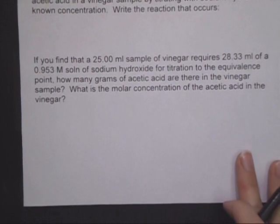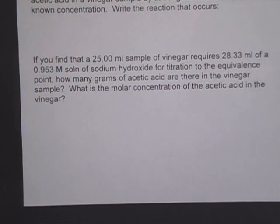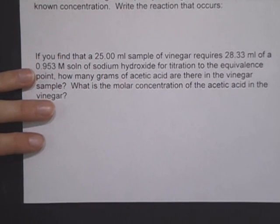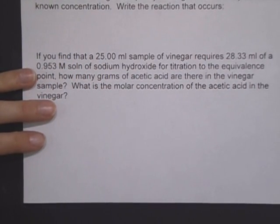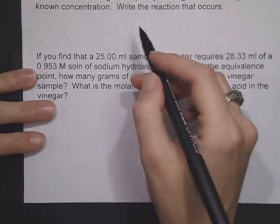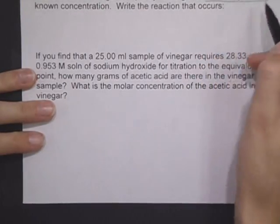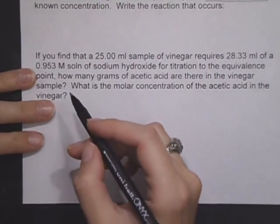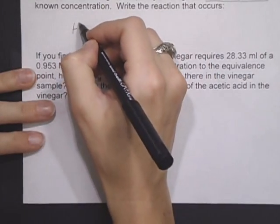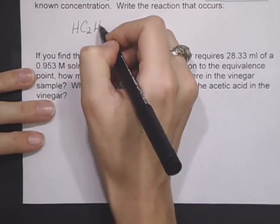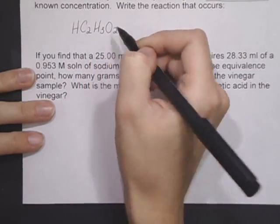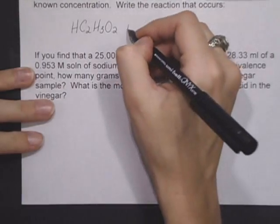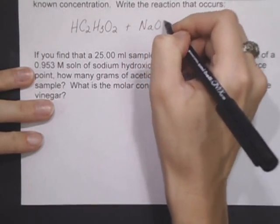Our first example problem is exercise 18 in our notes packet. Vinegar contains acetic acid. You can determine the mass of acetic acid in a vinegar sample by titrating it with sodium hydroxide of a known concentration. So the first thing we need is a balanced equation.